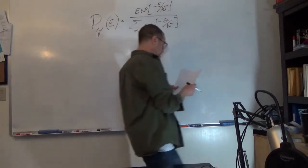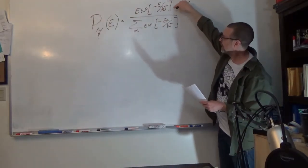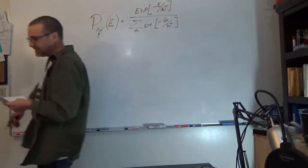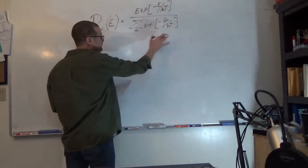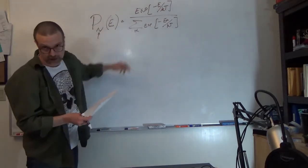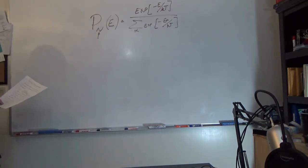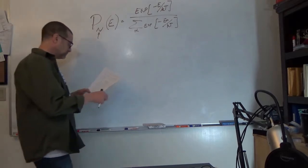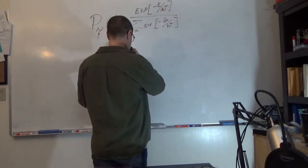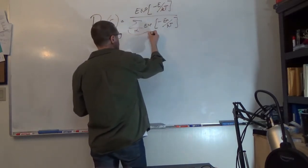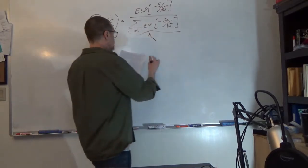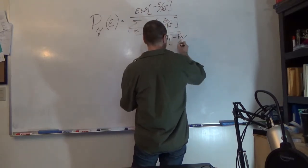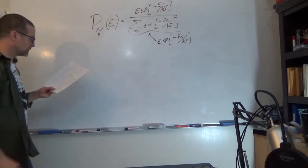The probability is given by a distribution proportional to exp(−E/kT), where the denominator is our partition function — the sum over all allowed energies consistent with the system. This partition function is related to the Helmholtz free energy F_n, where F = U − TS. So the Helmholtz free energy is the internal energy minus temperature times entropy.